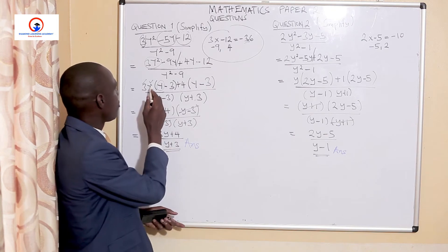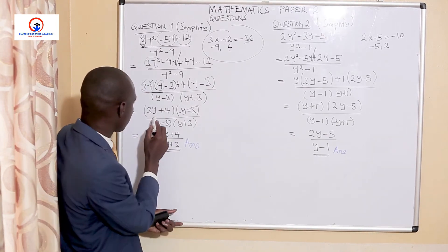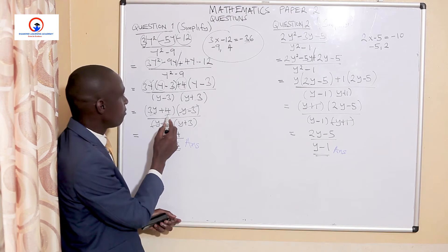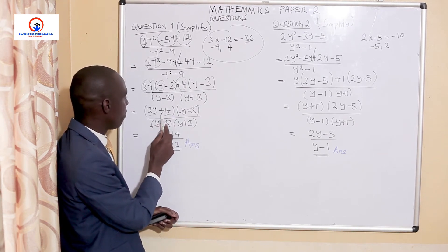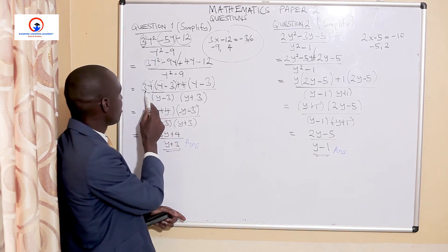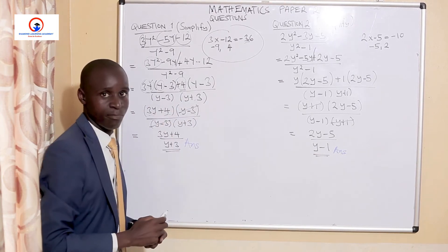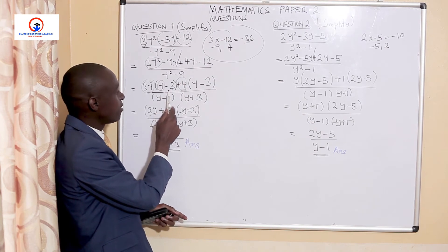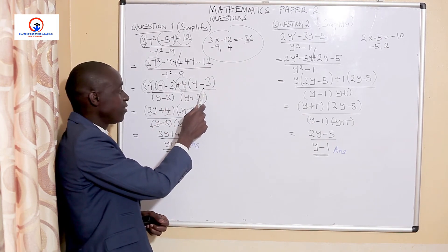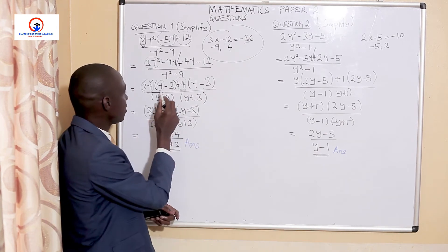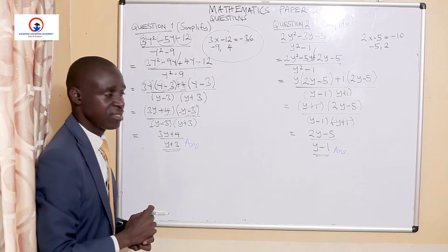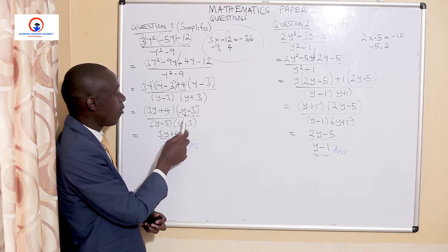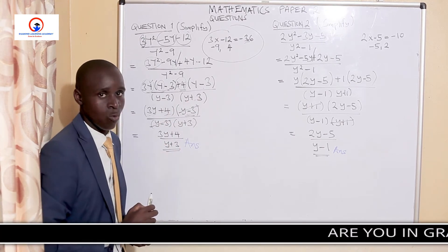Here is how we get them. We get our 3y that is outside there, and also the 4 that was common on the other part — we put it there, so it becomes 3y plus 4. We are able to notice one common thing: y minus 3 is also common on both sides. So I pick just one of them and drop it to that part. The numerator has become (3y plus 4)(y minus 3).